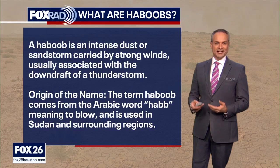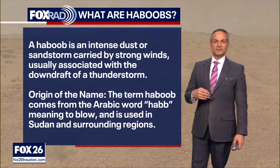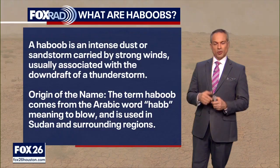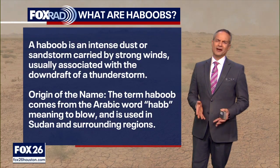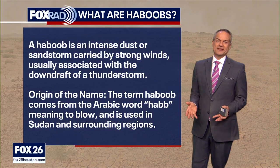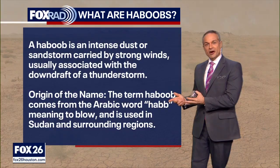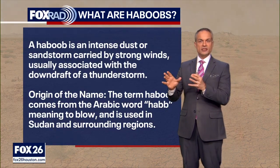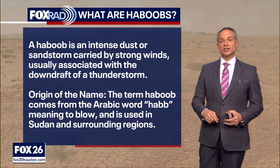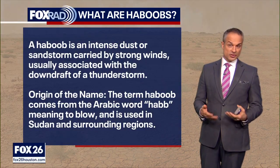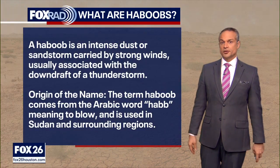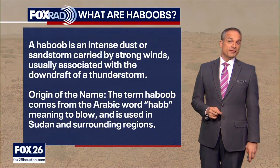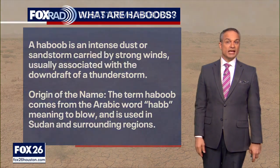A haboob is an intense dust storm carried by strong winds that come out of usually the downdraft of a thunderstorm, or a downburst out of a thunderstorm. Why are they called haboobs? It's a funny-sounding name, but it comes from the Arabic word 'hab,' which means to blow, like a gusty strong wind. It was originally used to describe sandstorms and dust storms in the North African region. It is the technical definition of a dust storm — a haboob.